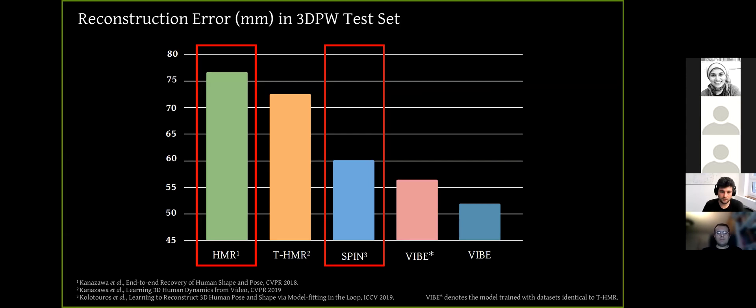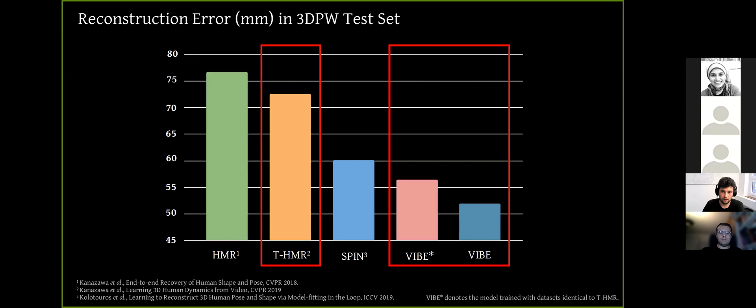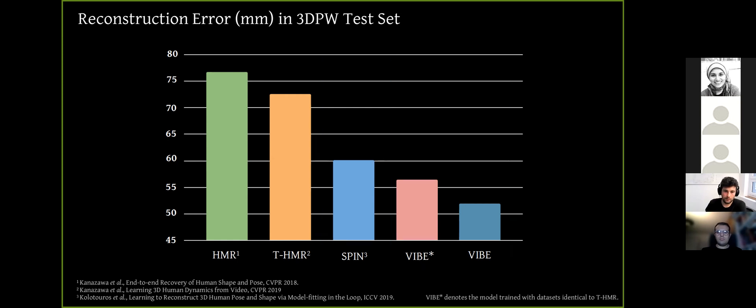So here, HMR and SPIN, which are shown with red boxes, are frame-based pose and shape estimation methods. On the other hand, Temporal HMR and VIBE take video as input. HMR and VIBE improves the performance around 20 millimeters compared to the Temporal HMR model.